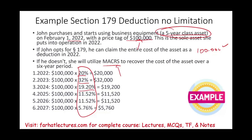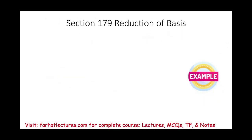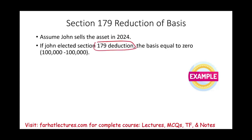Every time you take a deduction — whether MACRS or Section 179 — it reduces your basis. Assuming John sells the asset in 2024: if John elected Section 179, his basis for the asset is zero, because the cost started at $100,000 and he immediately deducted the full $100,000. Therefore if John sells the asset for any amount, the full proceeds are taxable gain.